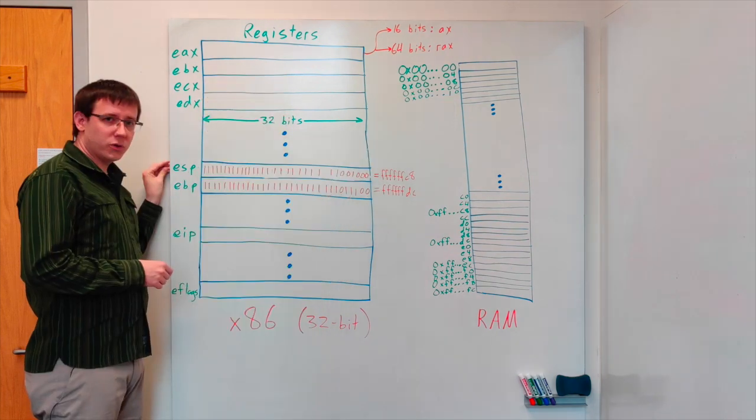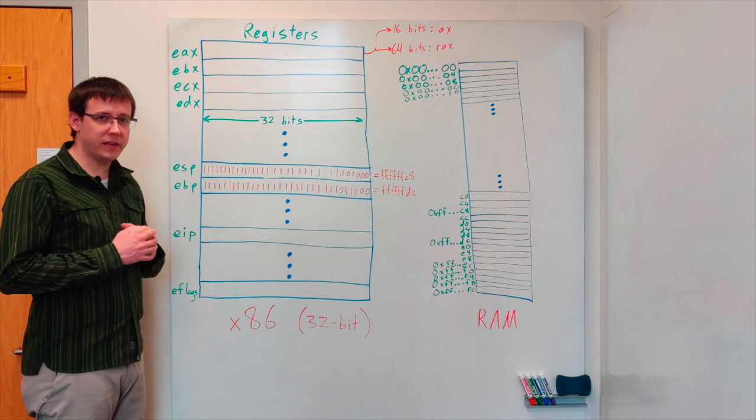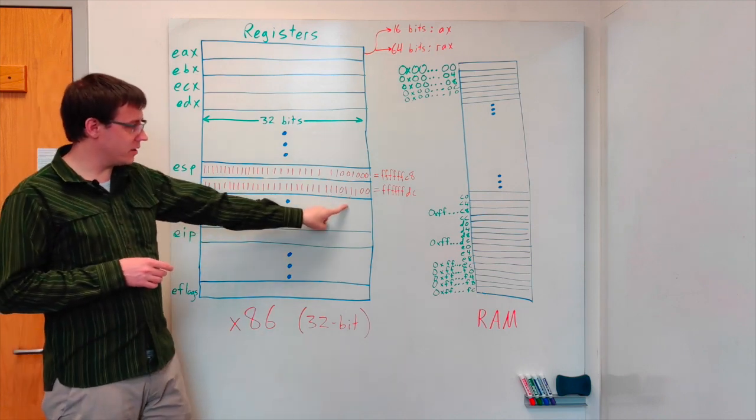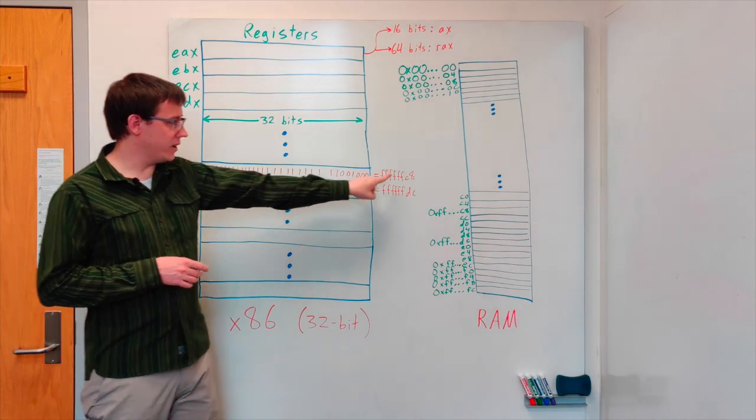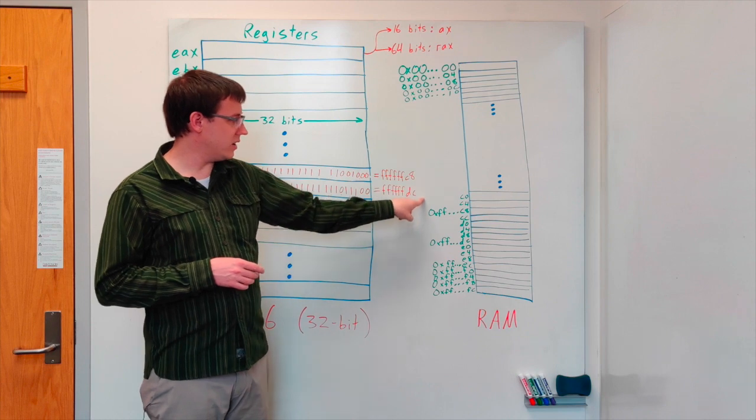We have address zero then address four then eight then twelve written in hex is c then sixteen written in hex is one zero. So currently we have 32-bit values stored in both the ESP and EBP registers and if we translate those binary values into hex we get FFFFFC8 and DC.